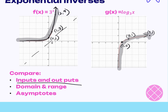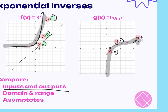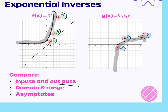Look at your inputs and outputs. On the exponential function, the inputs — the x-values — go 0, 1, 2: you're adding 1 to each one, increasing additively. The outputs are multiplying by 3 — changing multiplicatively. Now compare to the log function: the inputs are changing multiplicatively by 3, and the outputs are changing additively by 1. They are the reverse. That pattern is how you determine if something is exponential or log based on coordinate points.